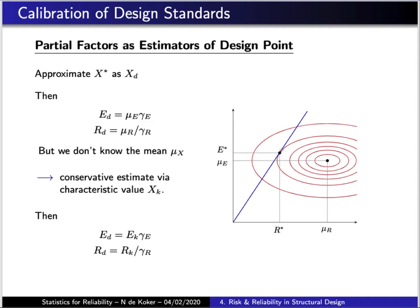In an ideal case, if you know what your mean parameter values are, you can multiply the mean values by some adjusting factor, which we call the partial factor, to get to the design point.